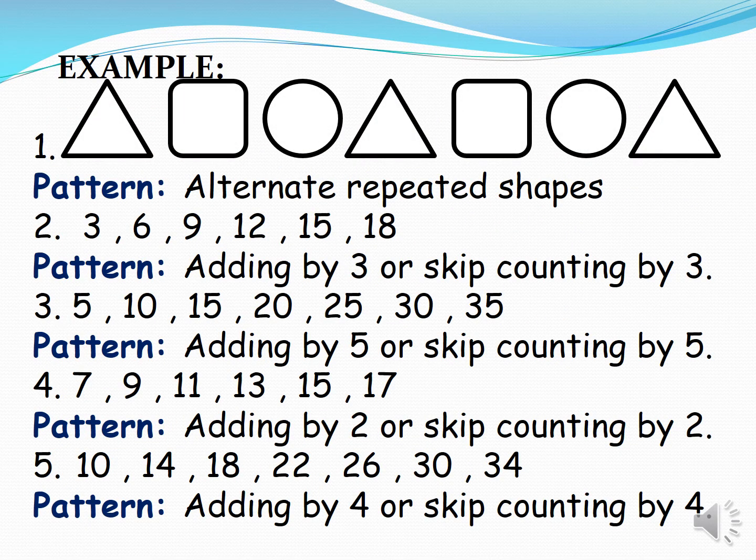Example Number 1: We have 3 shapes - Triangle, Square, Circle, Triangle, Square, Circle, Triangle. So, our pattern is alternate repeated shapes.